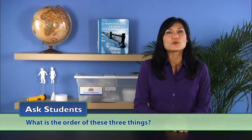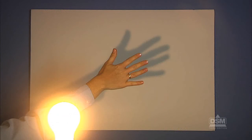Ask students, what is the order of these three things? The student should note that the object is between the light and the surface that the shadow falls upon, making the proper order light, object, then surface.